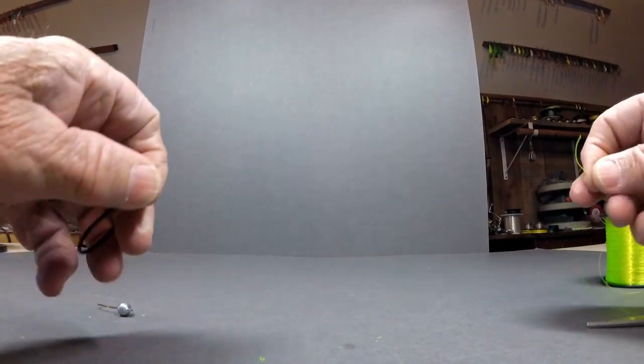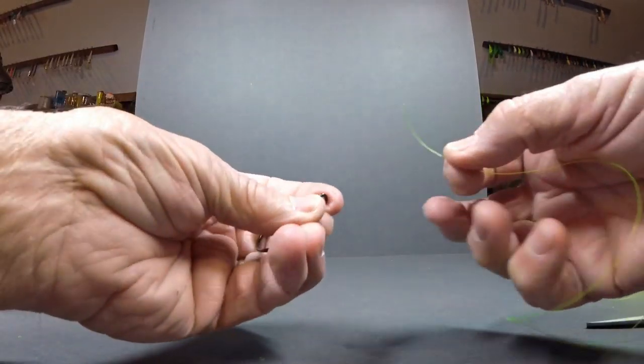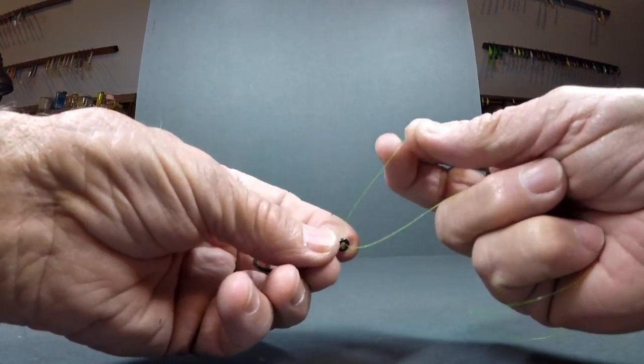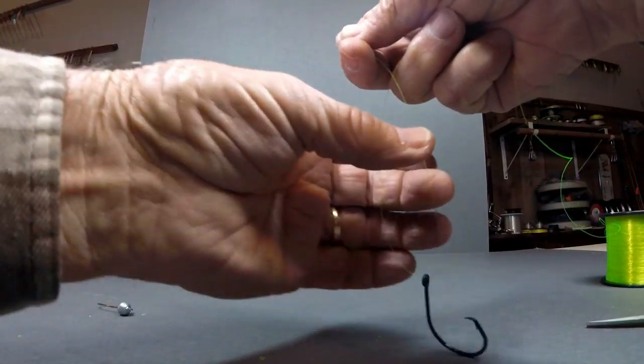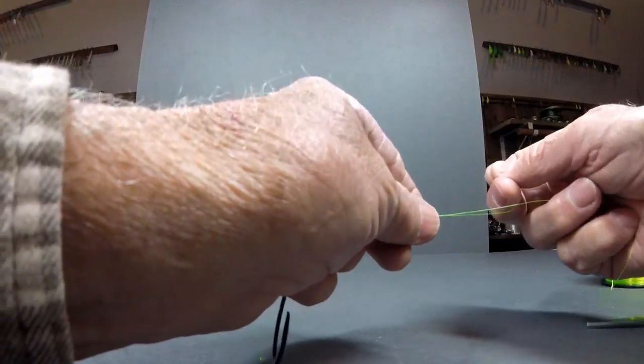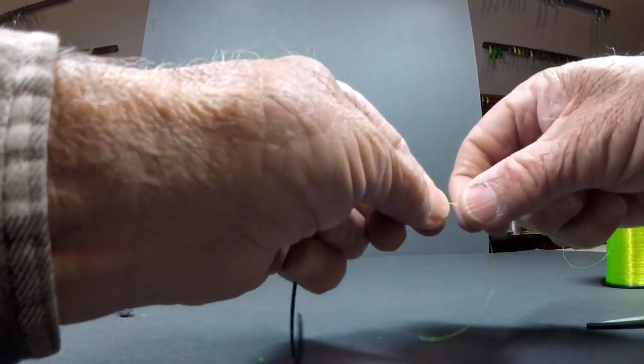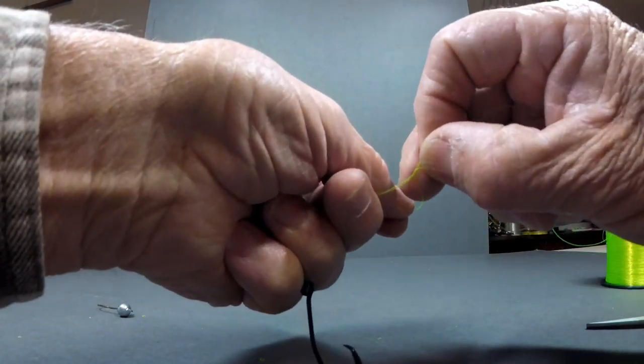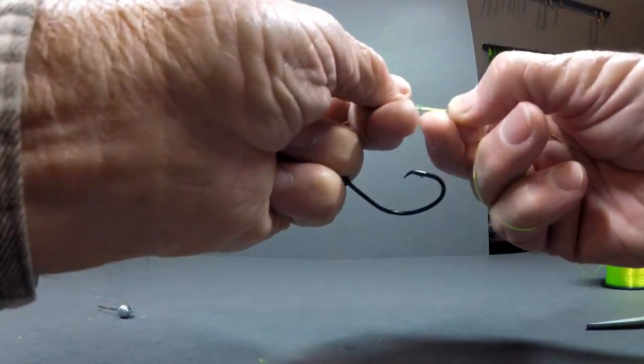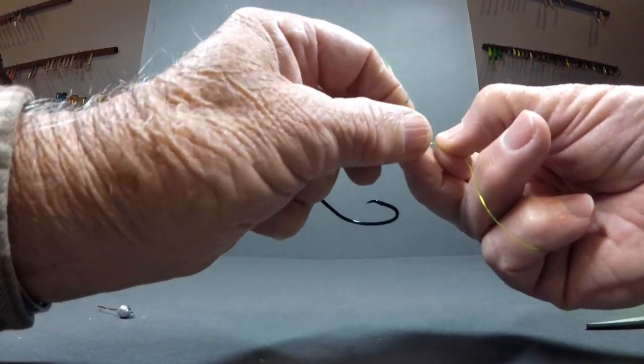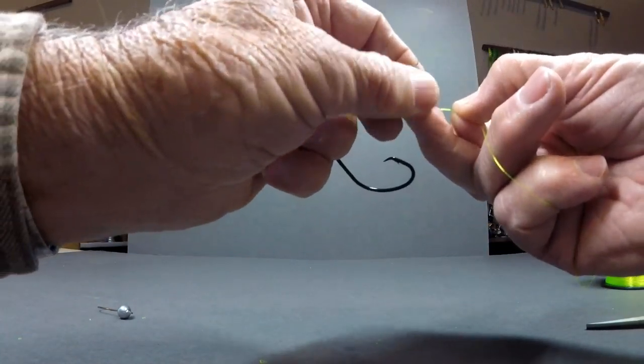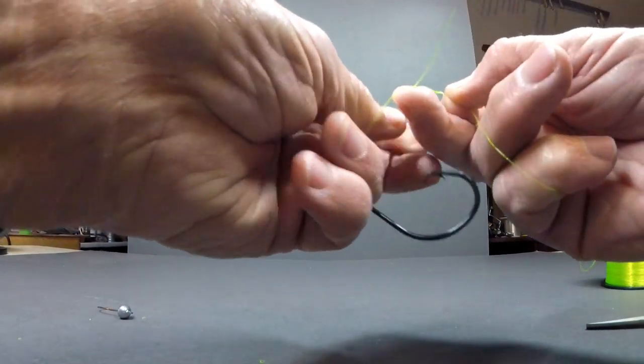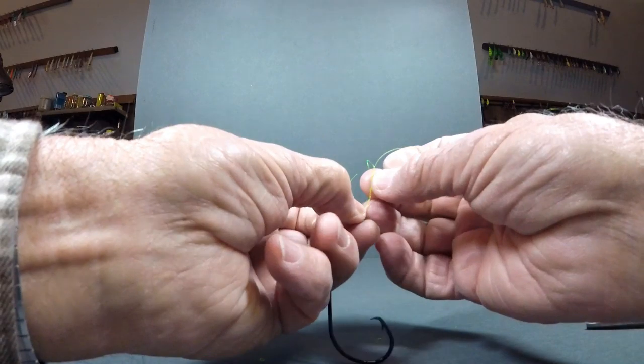Here we're going to show you how to tie the guide's knot on a circle hook. You run the line through the hook, get about six inches of line, pinch the line to form a loop, and then wrap the tag line around the main line four or five times. Then run the tag line through the loop that you formed when you pinched it.